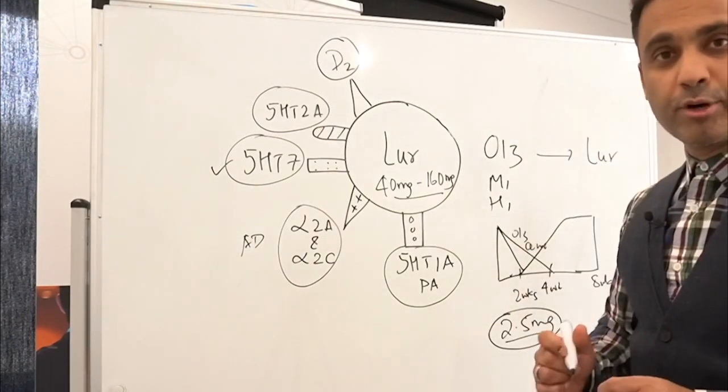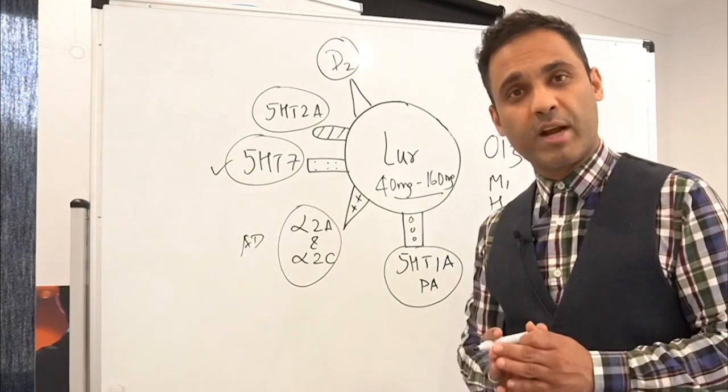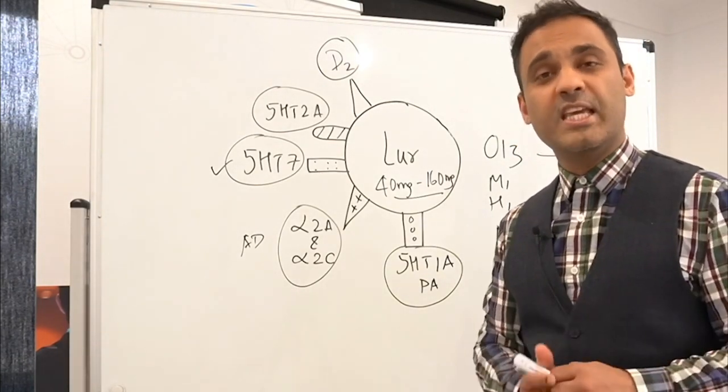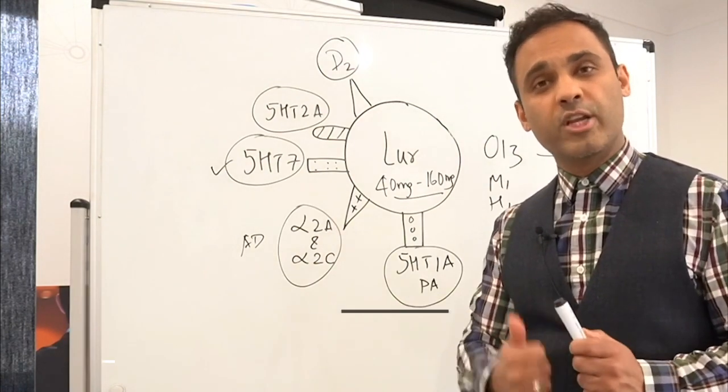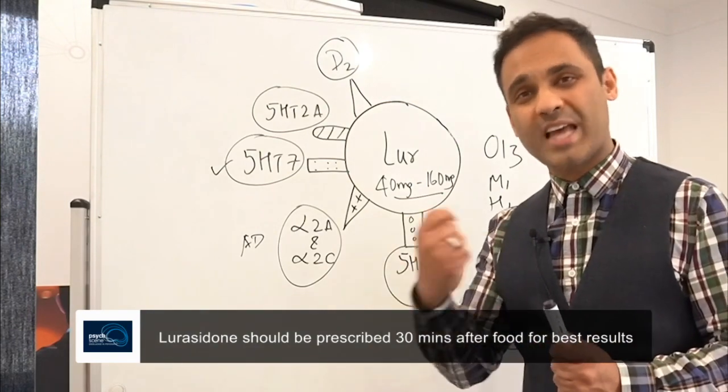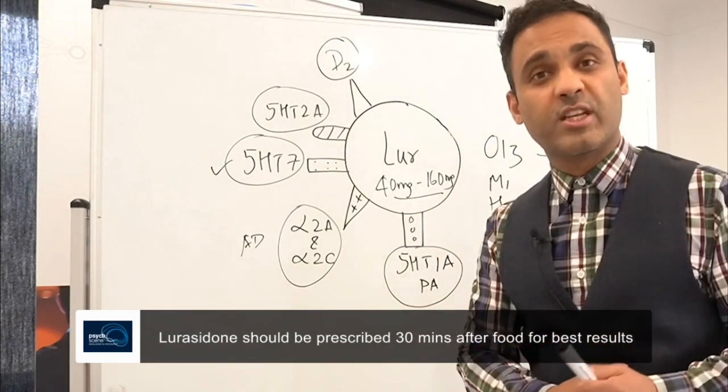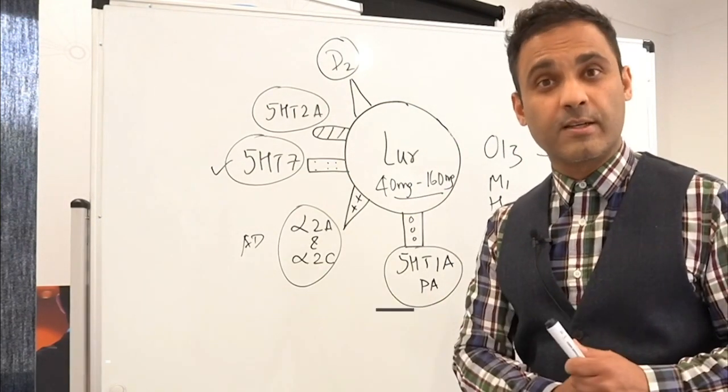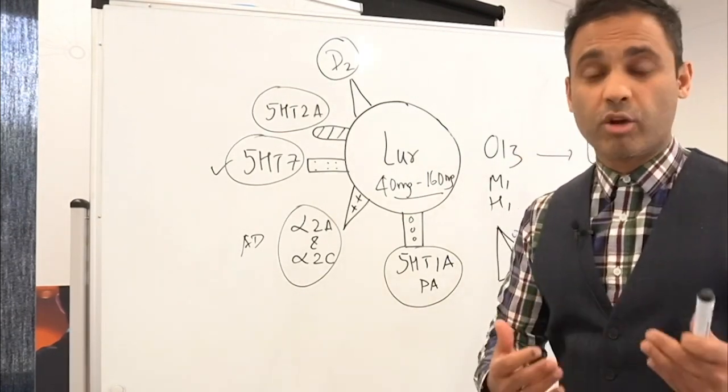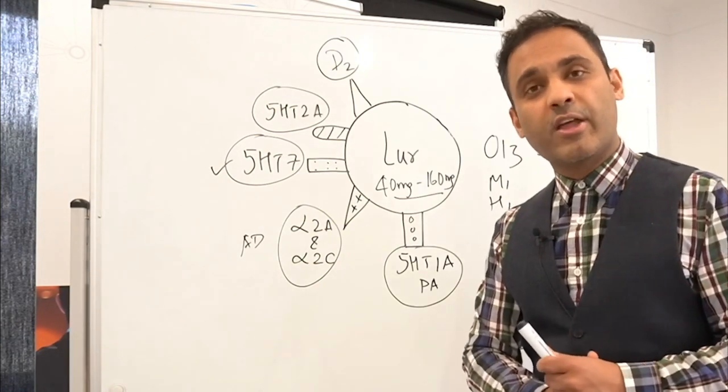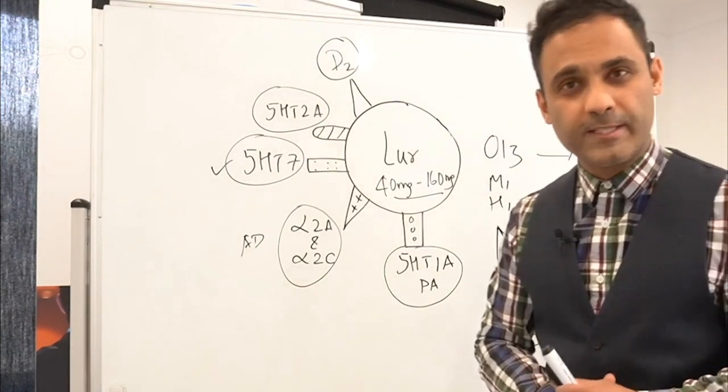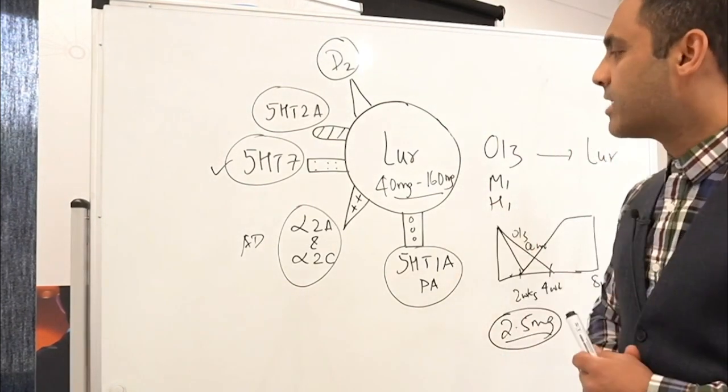Now, one other important pearl when administering lurasidone is it is very important, as mentioned earlier, to give it 30 minutes after food in the evening. Two reasons: one, 30 minutes after food to maximize absorption, because if you say with food, sometimes patients might just have it and then go and have dinner half an hour later or an hour later, and that might cause issues in the absorption, might not result in maximal absorption. And the other thing is, the reason why we give it in the evening is to minimize the effects of akathisia.